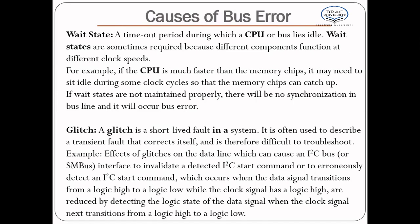For example, if the CPU is much faster than the memory chips, it may need to sit idle during some clock cycles so that the memory chips can catch up with the CPU speed. If wait states are not maintained properly, there will be no synchronization in bus line and it will occur bus error.